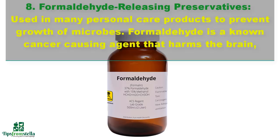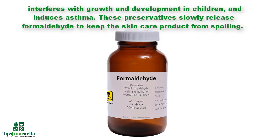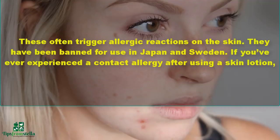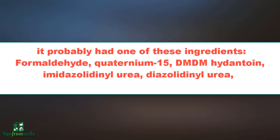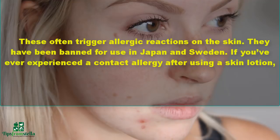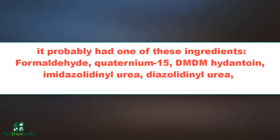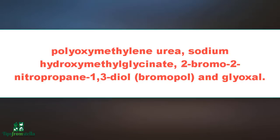Number eight: formaldehyde-releasing preservatives. These are used in many personal care products to prevent growth of microbes. Formaldehyde is a known cancer-causing agent that harms the brain, interferes with growth and development in children, and induces asthma. These preservatives slowly release formaldehyde to keep skincare products from spoiling and often trigger allergic reactions. They have been banned in Japan and Sweden. If you've ever experienced a contact allergy after using a skin lotion, it probably had one of these ingredients.